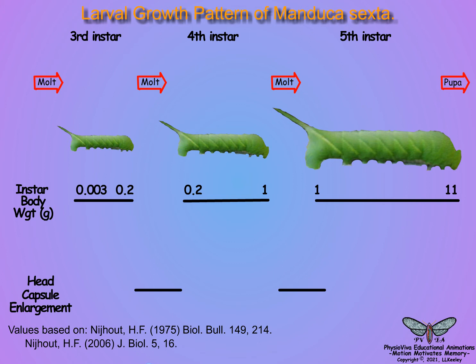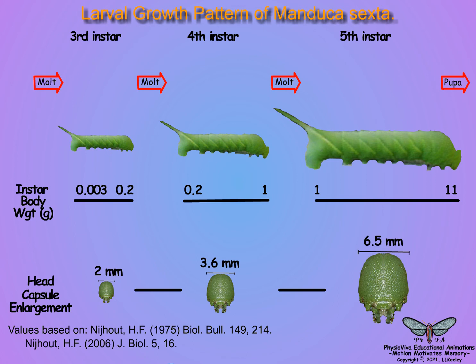Therefore, insects require a body structure to serve as a marker for measuring when the larvae have reached their last instar and are ready for pupation. Such a marker must count instars and not be enlarged by growth. The structure must be fixed in size at the start of the instar, does not increase as the rest of the body enlarges during the instar, but jumps to its next discrete size at the start of the next instar. The head capsule is such a structure.